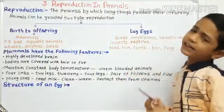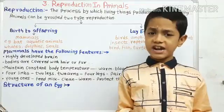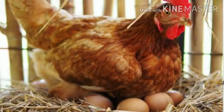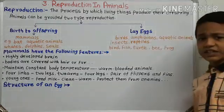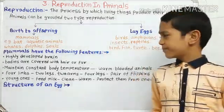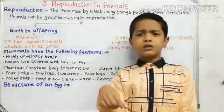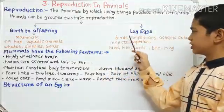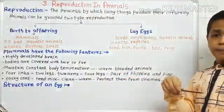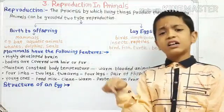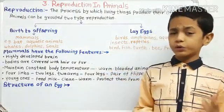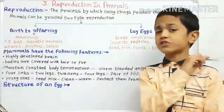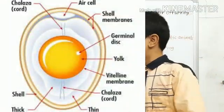The mama lays eggs, and both parents sit on them to keep them warm and protect them from climatic changes and enemies. Now we know how mummy and papa take care of the eggs and how they lay them. But we actually don't know the structure of an egg, so let's study that.